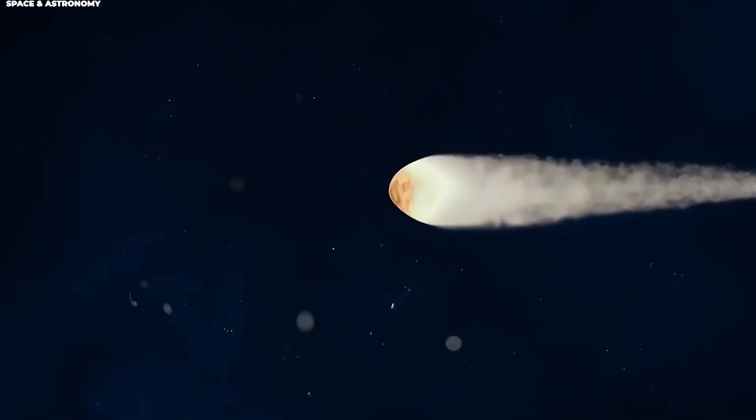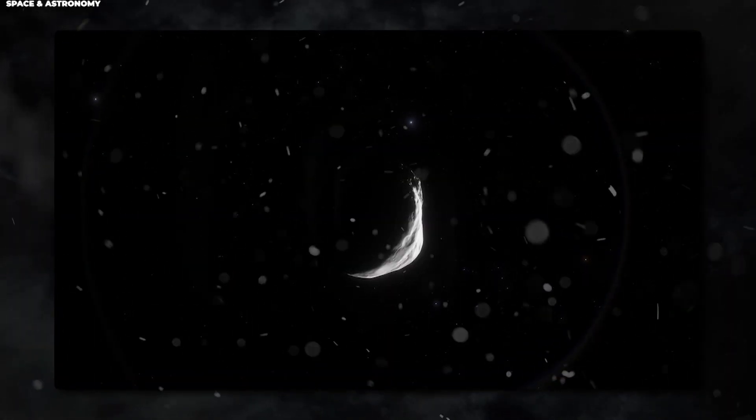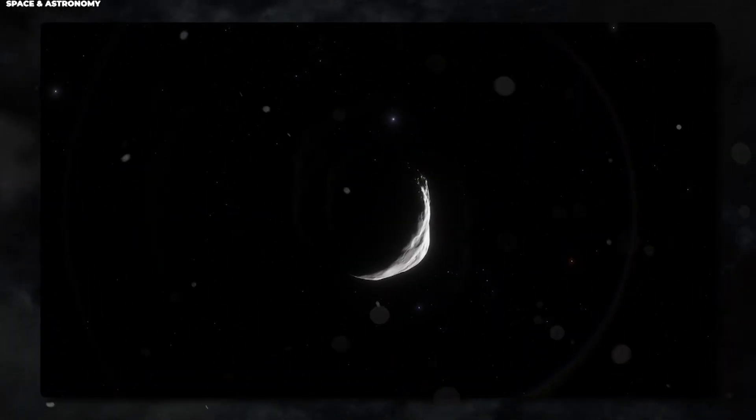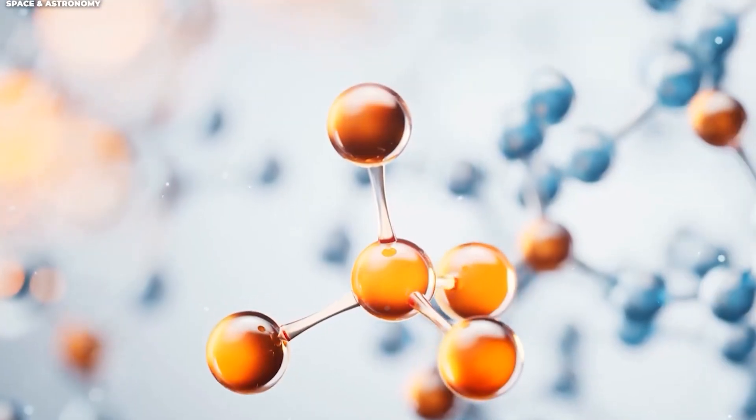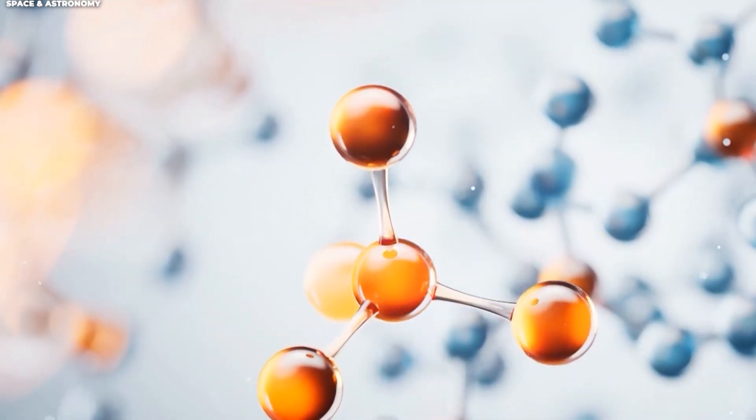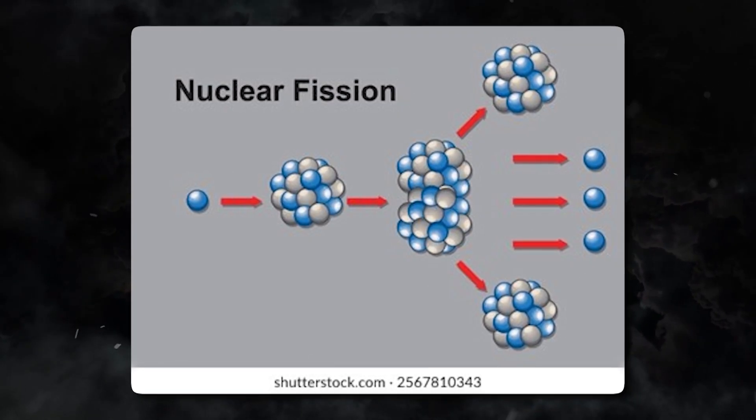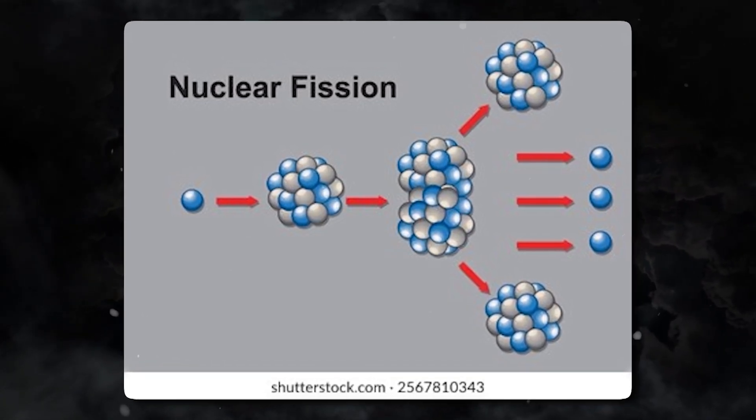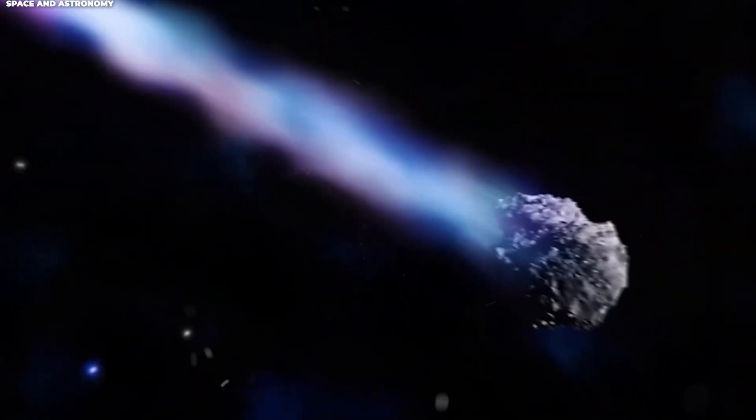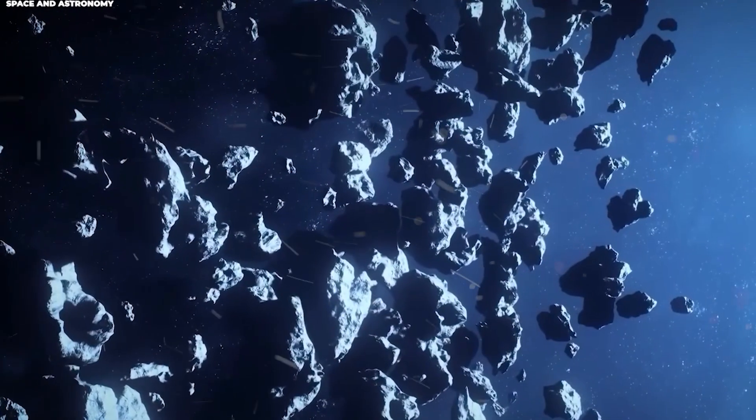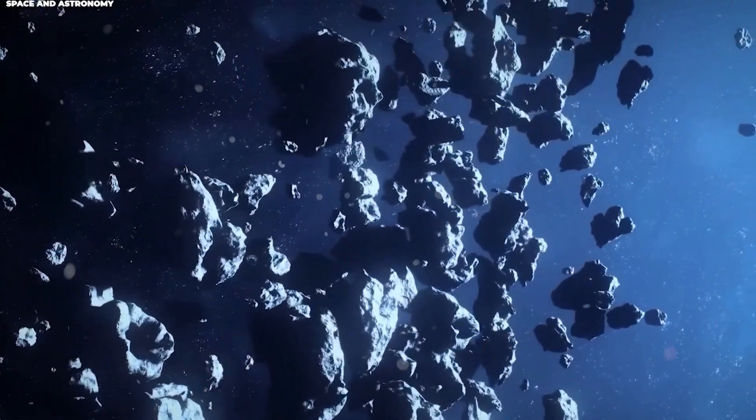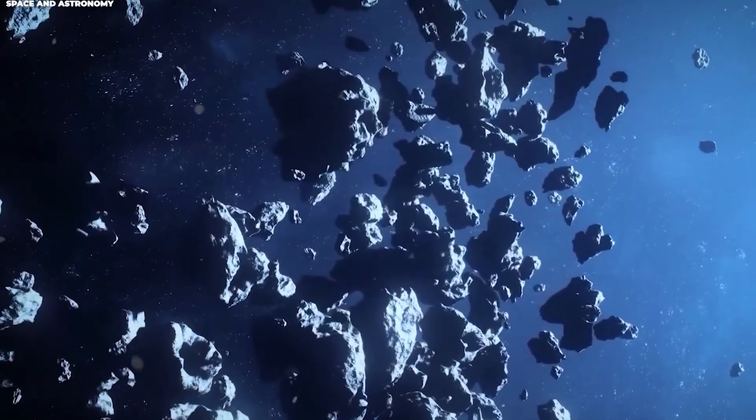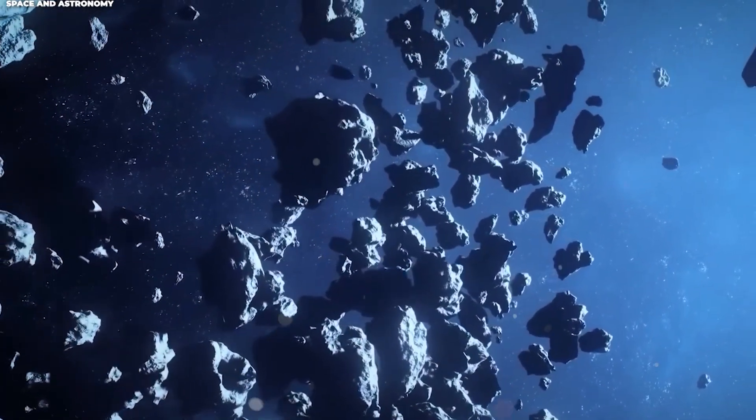Now, comets breaking up isn't entirely unusual near the sun. But what made this special was what it revealed about the comet's composition and structure. The images showed a piece of the nucleus splitting off, and scientists could actually watch this happen in real time. This fragmentation allowed researchers to peer inside an interstellar object for the first time in human history. It was like the comet was opening itself up for examination.